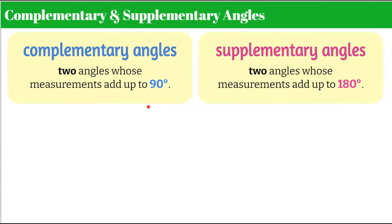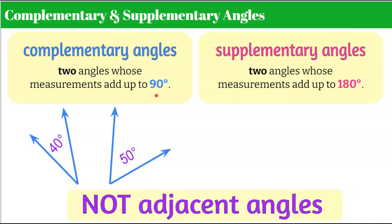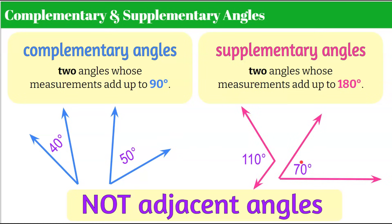Angles don't have to be adjacent to be complementary or supplementary. Here are two separate angles: 40 degrees and 50 degrees — their sum is 90 degrees, so they're complementary even though they don't share a vertex or side. Similarly, 110 degrees and 70 degrees are supplementary even though they are not adjacent angles. They're still classified as complementary or supplementary based on their sum.